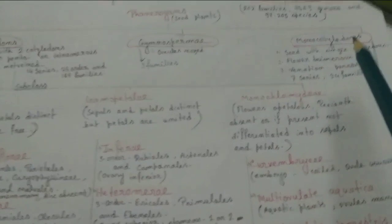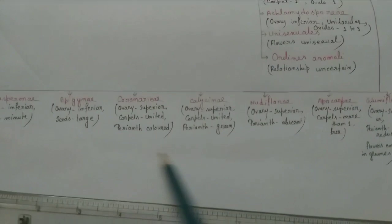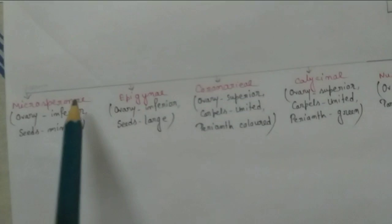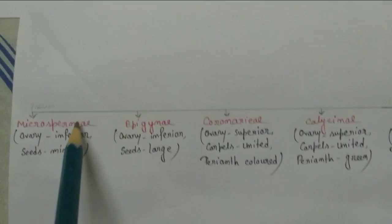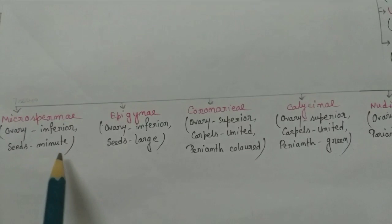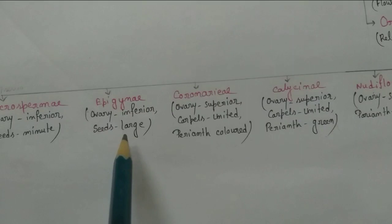Now we come to the Monocotyledons. This class is directly divided into seven series. There is no subclass. First one is Microspermae, where the ovary is inferior and seeds minute. Next, the Epigynae, where the ovary is inferior but seeds are large.